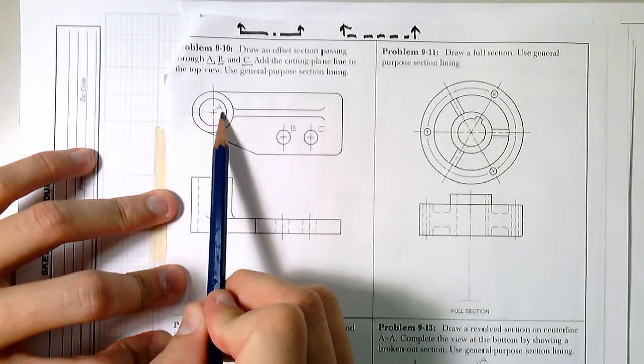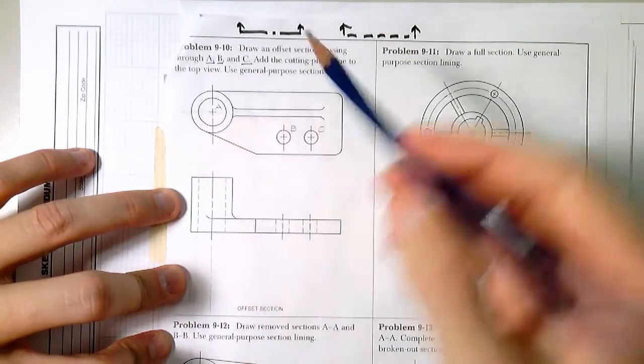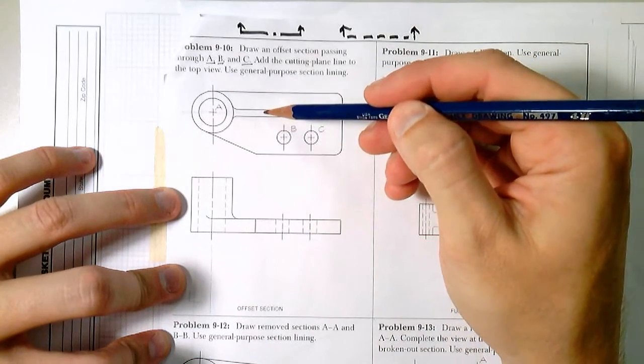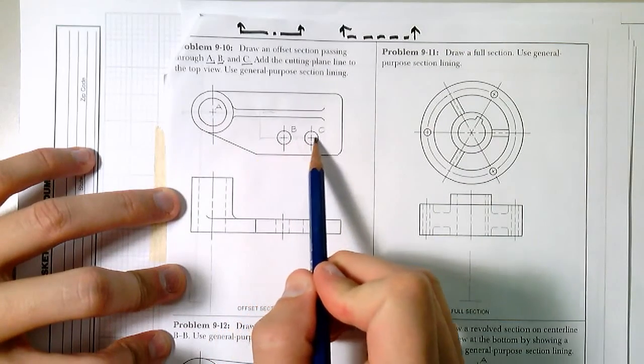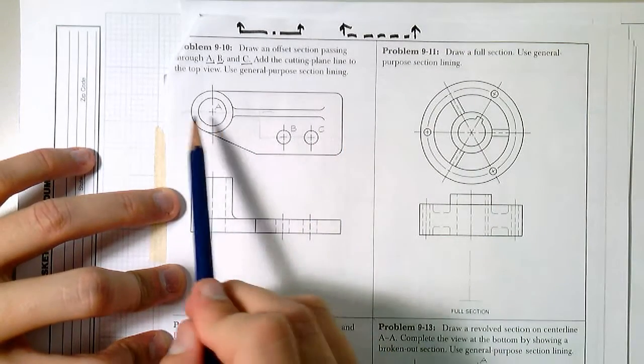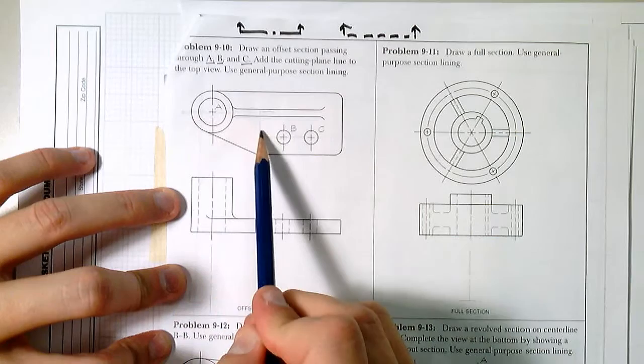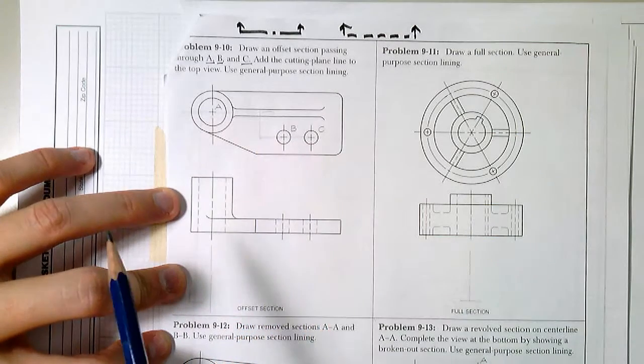So we're going to go through A, and the offset section will require us to kind of come down and then through B and C. And the easiest thing is just going to be to follow through this portion here.